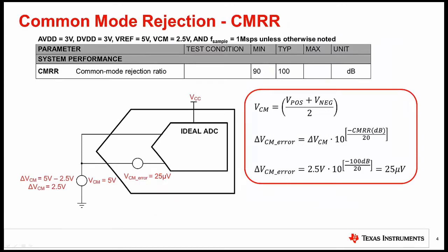This slide shows an example of an ADC's common mode rejection specification. A simple way to test common mode rejection is to connect the two inputs together and sweep the common mode voltage. Remember that common mode voltage is the average of the voltage on the two inputs. So when the inputs are tied together, the input signal is the common mode voltage.